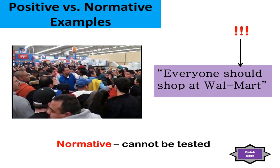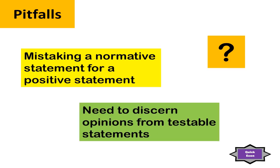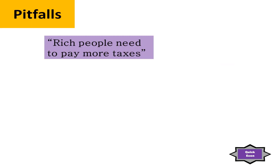A big pitfall with positive and normative is that we often make the mistake of looking at a normative statement and agreeing with it, and therefore saying that it's a positive statement. Look at the following example: rich people need to pay more taxes. Many of you would say, sure, that's true, I agree with that — that's positive economics. But there are some problems with that statement. Number one, the word rich is poorly defined, and also the way it's written, we can't prove or disprove it. Rich people need to pay more taxes — should they, shouldn't they? We can't prove that. It's normative, even though you may agree.